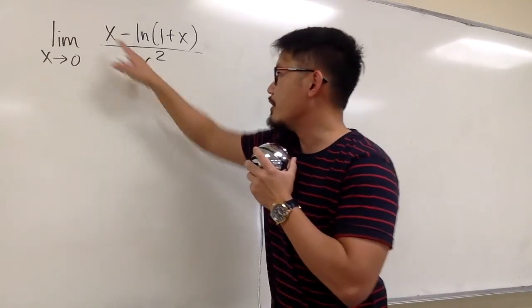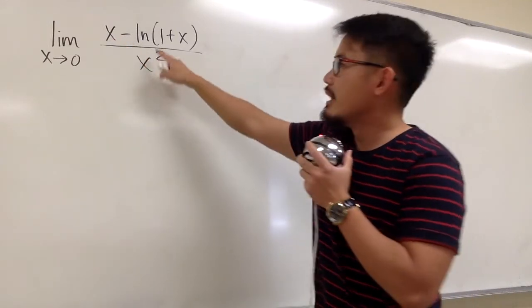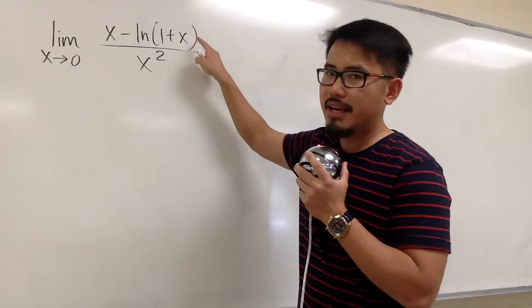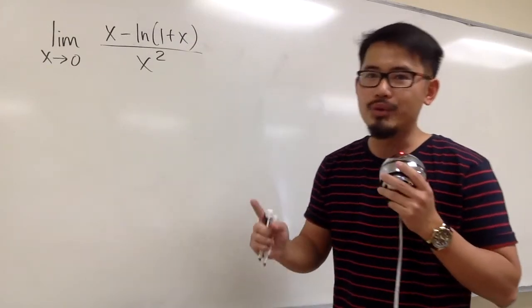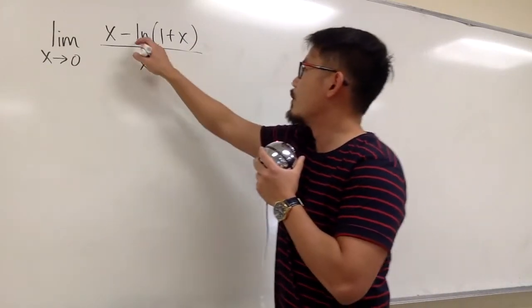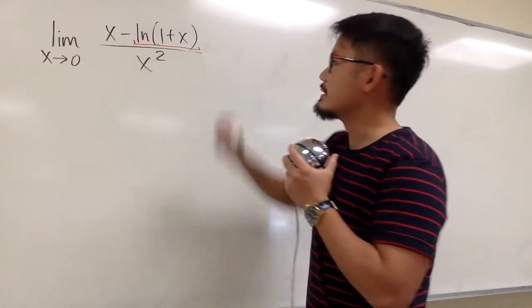We see that we have x here and x squared here, but the ln(1+x) in this case is a more complicated function.